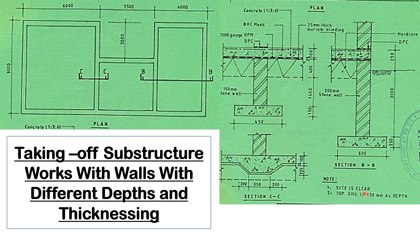So the notes that you are given: the site is clear, so we don't need to clear the site. Then top soil is 150 millimeters average depth. So after studying the diagram, the plan and the section, now we can go to taking off.